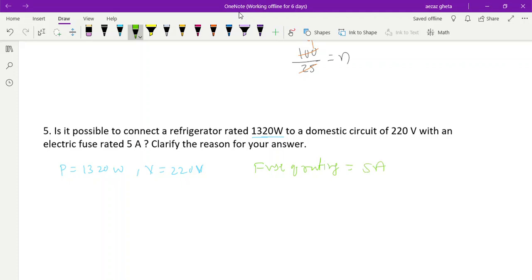Whether it is possible that 5 ampere fuse I can connect to a refrigerator line in which the power is 1320 watt? Let us see. Give reason. Power is equal to V into I. I need to find out I. P is 1320, voltage is 220 into I. I is equal to 1320 divided by 220. Cancel the zeros, 2 11s - you get 6 amps.